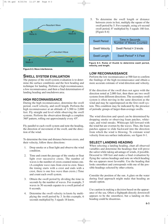Time and count each swell system. Obtain the swell period by dividing the time in seconds by the number of waves. For example, 5 waves in 30 seconds equates to a swell period of 6 seconds. Determine the swell velocity in knots by multiplying the swell period by 3; in this example, 6 seconds multiplied by 3 equals 18 knots. To determine the swell length or distance between crests in feet, multiply the square of the swell period by 5. For example, using a 6-second swell period, 6² multiplied by 5 equals 180 feet.